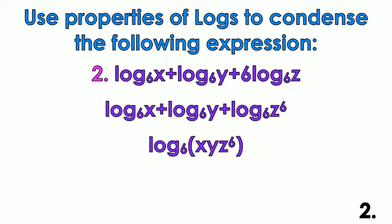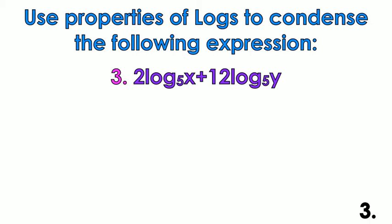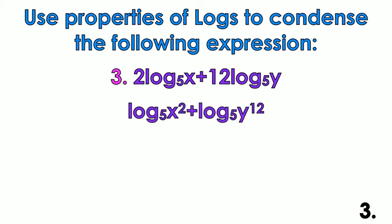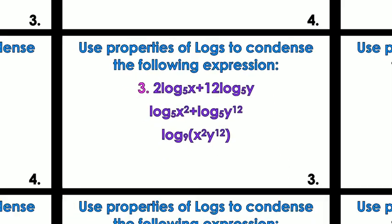Example three: I have 2 log base 5 of x plus 12 log base 5 of y. First we apply the power rule — the 2 becomes an exponent of x squared, and the 12 becomes an exponent of y to the 12th power. So we get log base 5 of x squared plus log base 5 of y to the 12th. Then we apply the product rule, which turns the addition into multiplication. Condensing is easy.